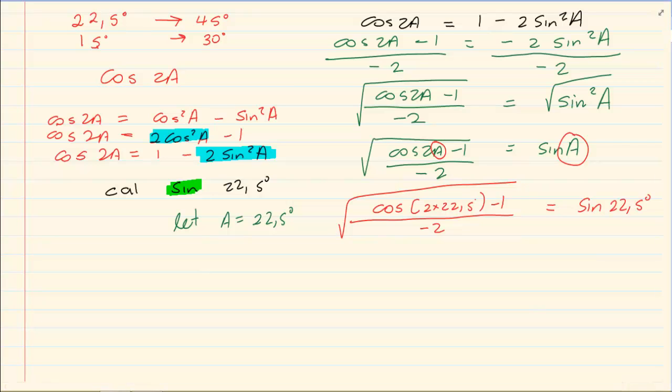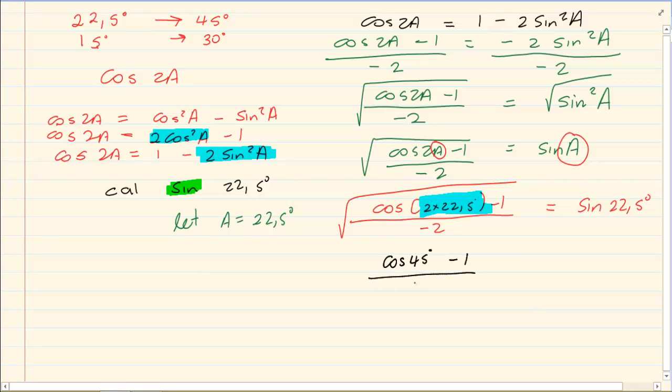Now look what happened here. At cos 2 times 22.5 I have cos of 45, which is a special angle. Once you have it linked to a special angle then you can continue with the basic algebra.